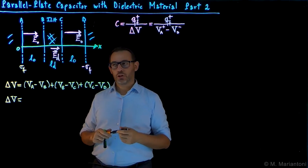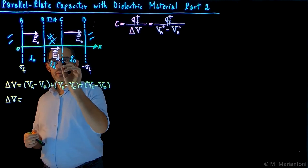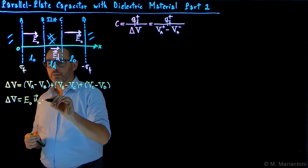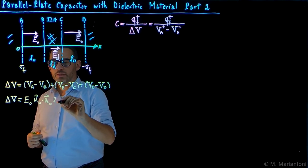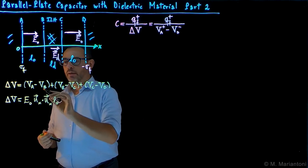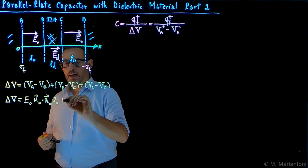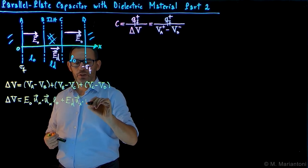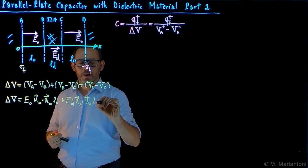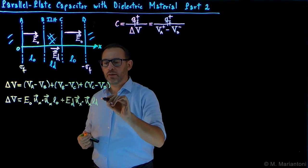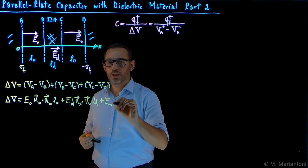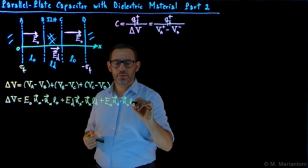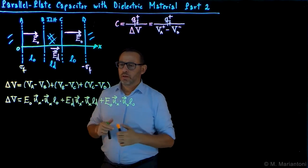Under these conditions, delta V in this Cartesian coordinate system is given by: E_0 times L_0 for the first vacuum region (since the field is uniform, the dot product gives one), plus E_D times L_D for the dielectric region BC, plus E_0 times L_0 for the final vacuum region, which again has the same field as the first.